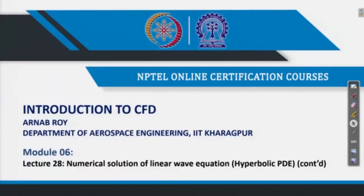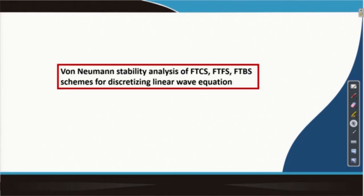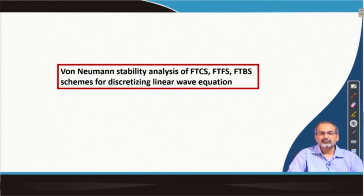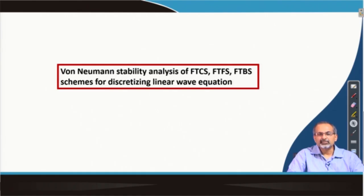We had started discussion on numerical solution of the linear wave equation in the last lecture and we will continue today. We were looking at the von Neumann stability analysis for different possible discretization schemes. We had looked at the forward time central space discretization last time, since we used that scheme for parabolic PDEs, but when we applied von Neumann stability to that scheme, we saw that it did not work for the linear wave equation. We have thought about using two other possible ways of discretizing the linear wave equation.